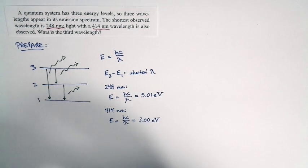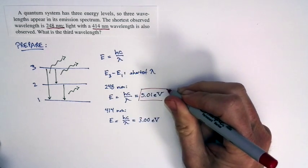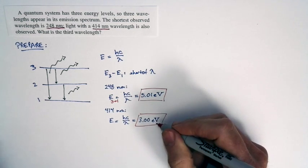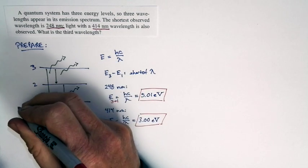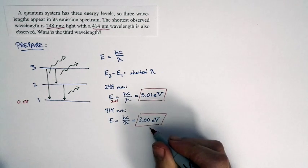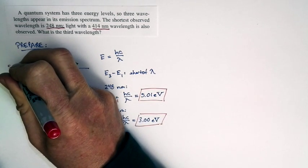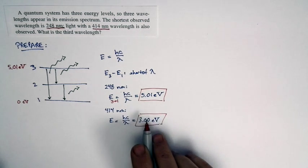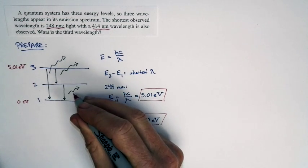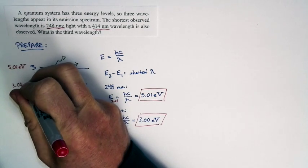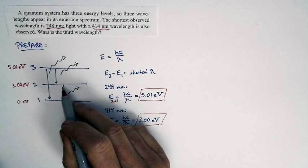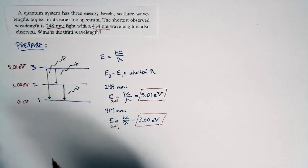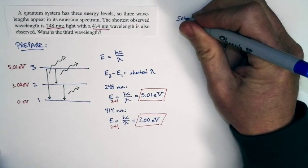The photon energy corresponding to a transition from state three to state one is 5.01 eV — that's the biggest possible transition. Let's suppose that state one corresponds to zero electron volts. That means state three corresponds to 5.01 electron volts. The 414 nanometer photon corresponds to a difference of 3.00 electron volts, so state two has an energy of 3.00 electron volts, meaning that photon corresponds to a transition from state two down to state one. We've completely specified this quantum system and are ready to solve.